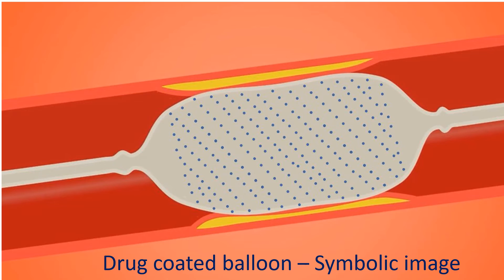Stent thrombosis can be catastrophic if an important blood vessel of the heart is affected. Even temporary implants called bioresorbable scaffolds have increased risk of clot formation within them. Temporary scaffolds are biodegradable and get absorbed over a period of time.